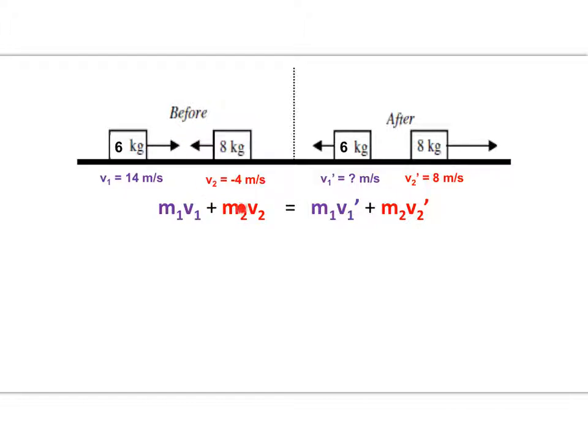And the other object, the second one, is traveling to the left, and we would call this a negative direction. If you think back when we did the types of forces notes, I mentioned up and to the right are positive, down and to the left are considered negative.